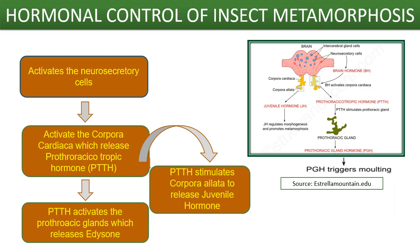Let us see the process by which hormones control insect metamorphosis. When an immature insect grows, it requires a larger exoskeleton. The sensory input from the body, as well as certain environmental factors, then activates the neurosecretory cells in the brain. These neurosecretory cells then activate the corpora cardiaca, which releases the prothoracicotrophic hormone, or PTTH. This PTTH then activates the prothoracic glands, which releases the hormone ecdysone. Similarly, PTTH also stimulates the corpora allata to release the juvenile hormone when required.